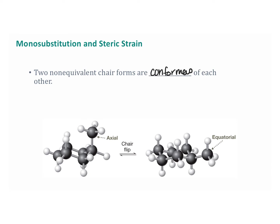The two chair conformations of methylcyclohexane do rapidly interconvert, but they're not equally favored. At any given time, about 95% of the molecule exists in the form where the CH3 is in the equatorial position, and the remaining 5% exists in the form with the axial CH3 group.